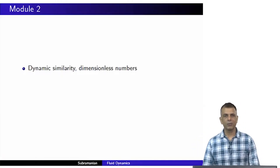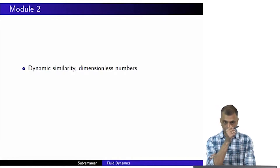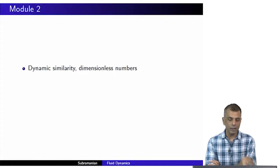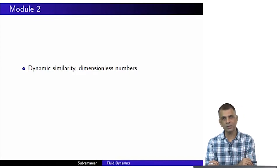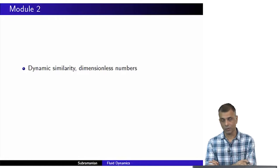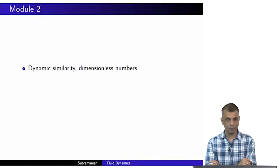We are back and will resume our discussion of dimensionless numbers in fluid dynamics. We went through a quick survey of several of these when we met last. Today, we will give special attention to the Reynolds number, for two reasons. We will encounter something called dynamic similarity, which illustrates the special importance of the Reynolds number. Additionally, the Reynolds number and the magnetic Reynolds number are especially important in astrophysics — hence my motivation in doing this.